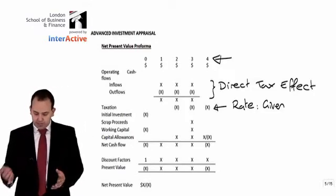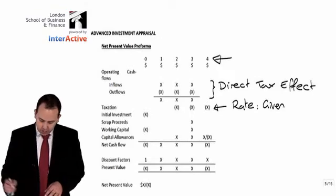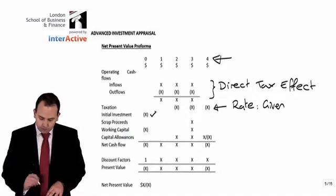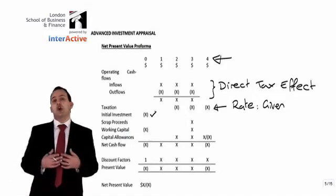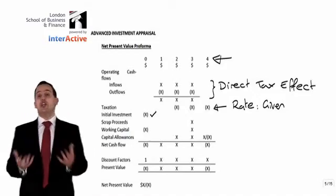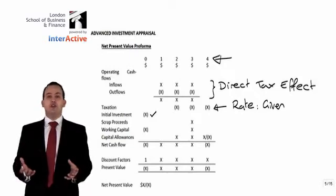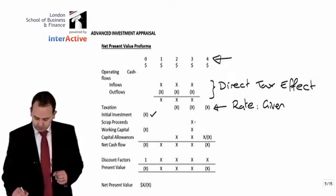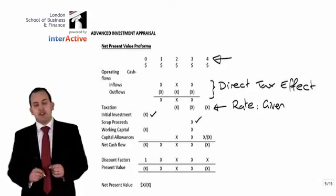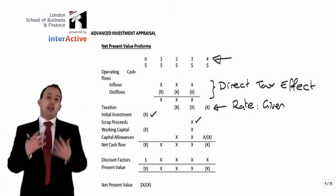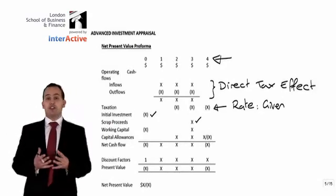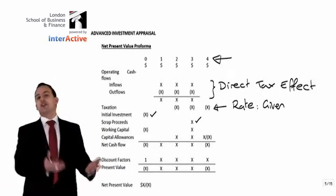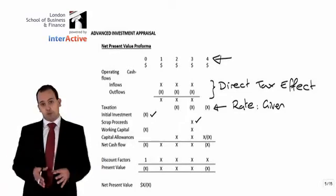Once you've dealt with your taxation, you can then deal with any other cash flows that come in. You have your initial investment for the project, which will typically be going out in year nought — and we consider year nought to be anything that takes place today. We may then have some scrap proceeds if the project involves buying a particular piece of machinery; if it can be scrapped at the end of the project, we'll have a cash inflow coming back through.